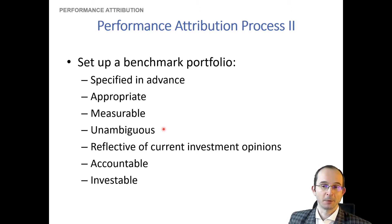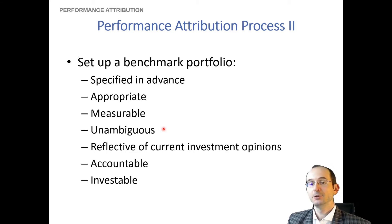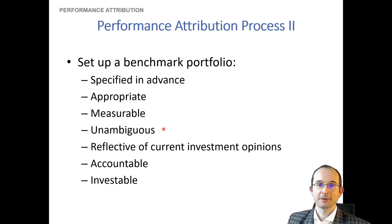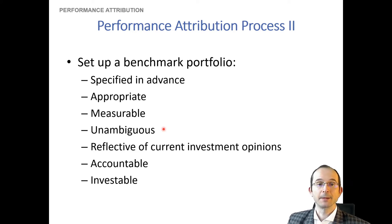The benchmark should be unambiguous — it should be known what is in the benchmark portfolio and what the weights are. With fine art, it wouldn't do to say your benchmark portfolio is 'some fine art'; you'd need to specify how much of each type, the weights and categories. With something like the S&P 500, you know exactly the weights of each stock because it's a market cap weighted portfolio, and you know all the stocks in that portfolio. The more unambiguous, the better.